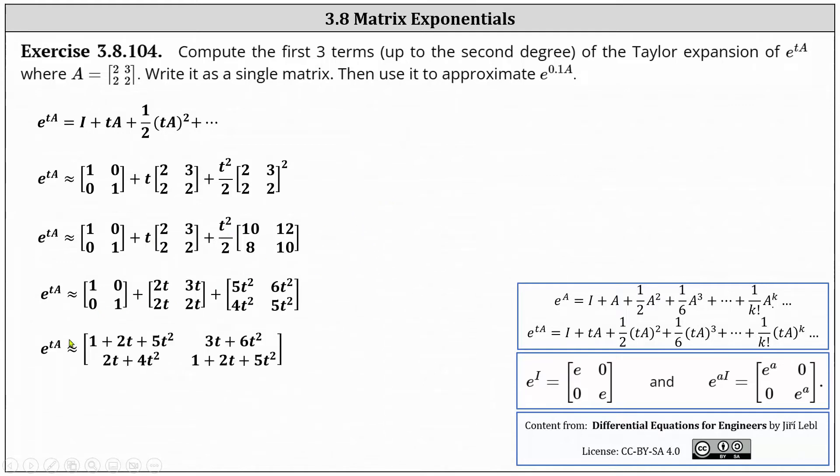e to the power of TA is approximately equal to the two by two matrix, where in the first row the entries are 1 plus 2T plus 5T squared and 3T plus 6T squared. And the entries in row two are 2T plus 4T squared and 1 plus 2T plus 5T squared.